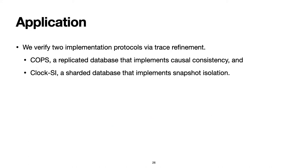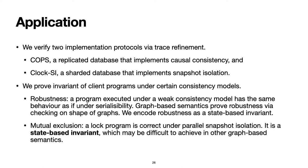Given our semantics, we have two applications. One is to verify implementations by trace refinement; we show how to do this for a particular replicated database and a particular sharded database. The challenge is linking the synchronization mechanism in the implementations to the view and closure mechanism in our semantics. We also show how to use our semantics to reason about client programs, proving invariance properties of reachable states. For example, we can prove robustness.